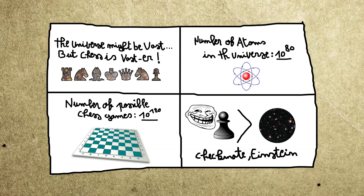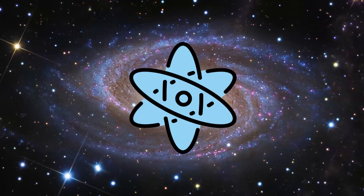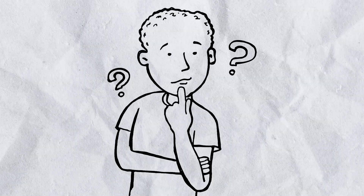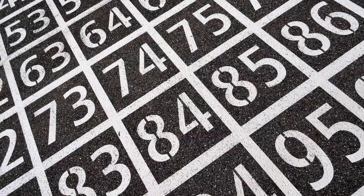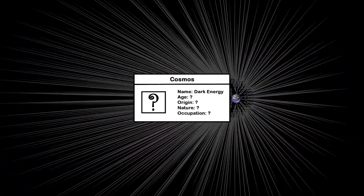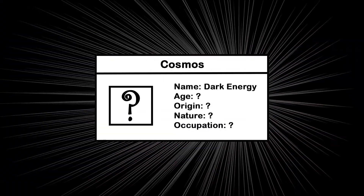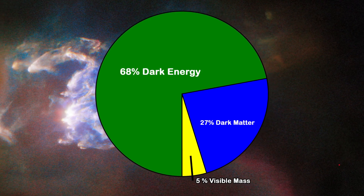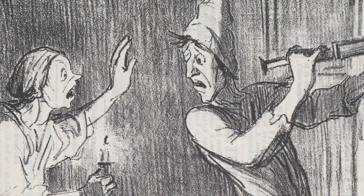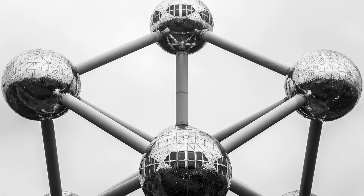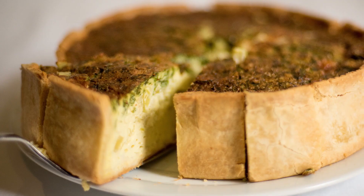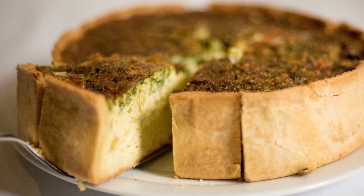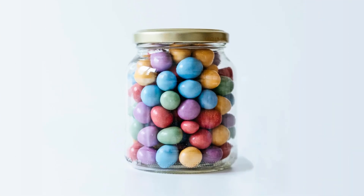There are more possible games in chess than there are atoms in the universe. But wait — how did they count the atoms of the universe? Well, no one did. This is just an estimation, since dark matter and dark energy make up 95% of the observable universe, and they, as far as we know, aren't made up of atoms.